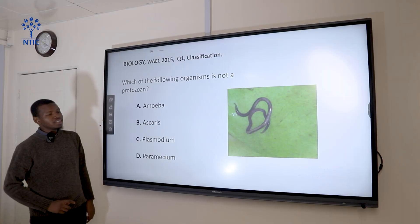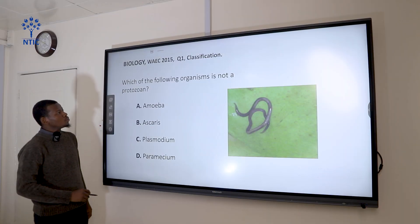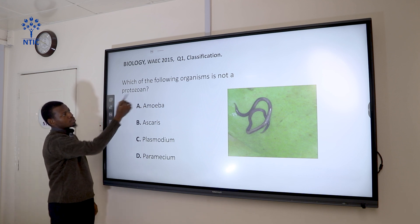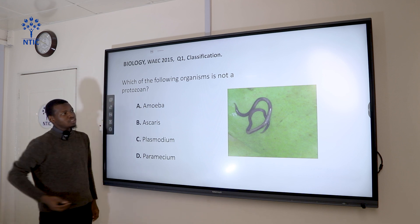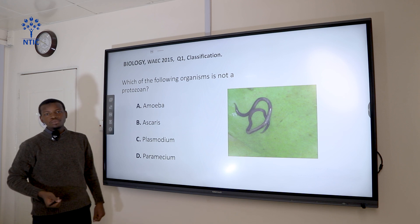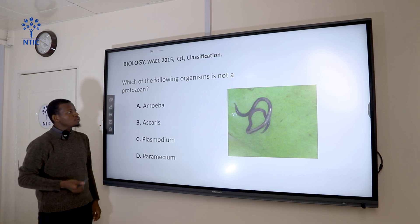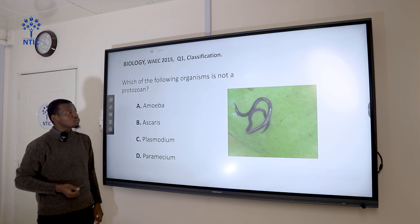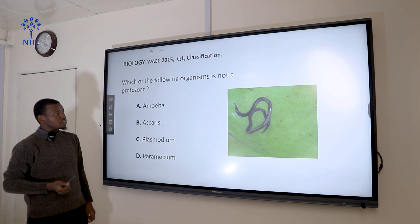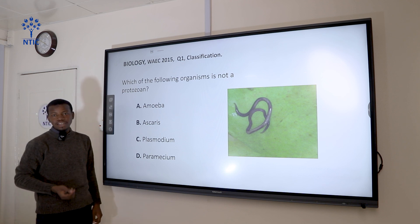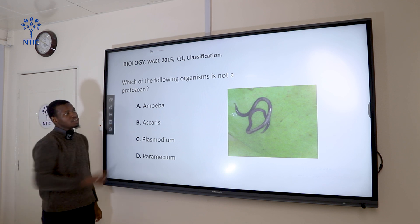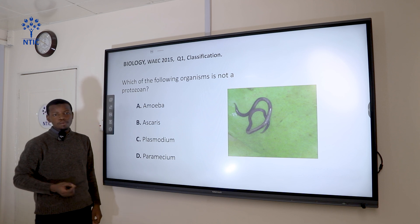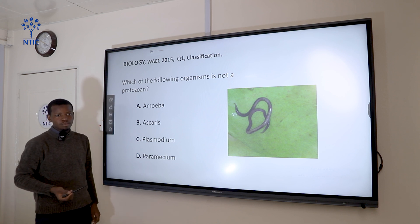Let's look at question 1: Which of the following organisms is not a protozoan? Protozoan is the key word here. A protozoan is a unicellular eukaryotic organism that belongs to Kingdom Protoktista. Some of them behave like animals — that's the protozoan — while the other members of Kingdom Protoktista do not behave like animals.